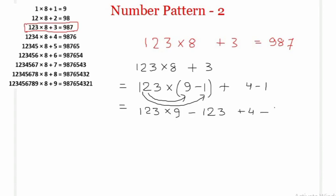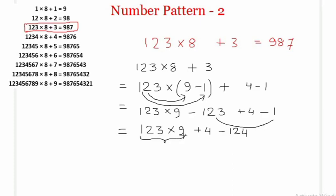Combining the terms −123 + 4 − 1 gives −124 + 4 = −120... grouping more carefully: −123 + 4 − 1 = −120. So we have 123 × 9 − 124. To find the value of 123 × 9, we refer to video number 1 (number pattern 1), and after simplification we get 1111 − 124.